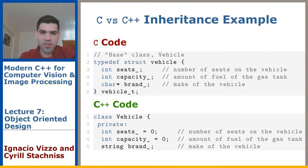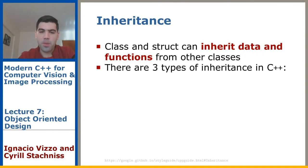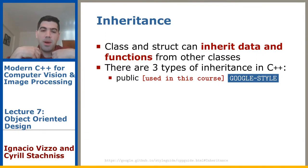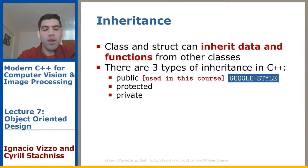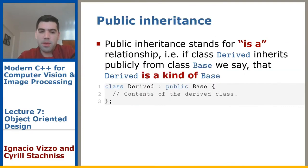The idea behind inheritance is that a class or struct can inherit data and functions from other classes, allowing us to express relationships between types and reuse code. There are basically three types of inheritance in C++. Public inheritance is the one we use — if you derive a class from a base class with public inheritance, all public methods remain public in the derived class, and protected ones remain protected.